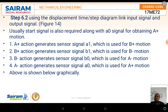A start signal is also required along with the A0 signal, which initiates the A+ motion. Sensor or limit switches are used throughout. The A+ action generates sensor signal A1, which is used for B+ motion. The B+ action generates signal B0, which is used for B− motion. The B− action generates signal B0, which is used for the A− motion. The A− action generates signal A0, which is used again for A+ motion.